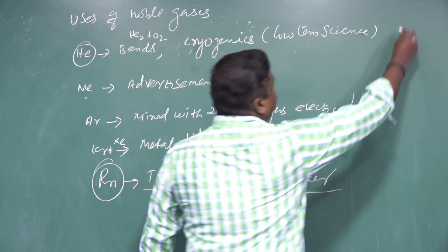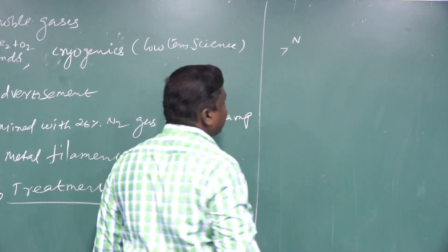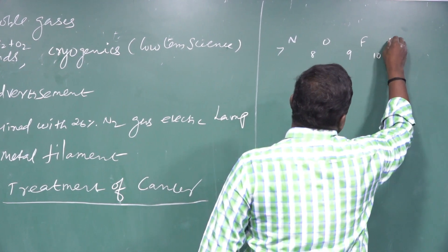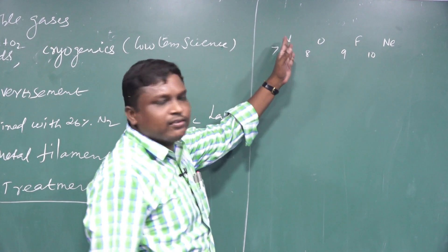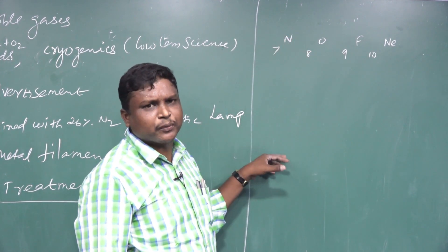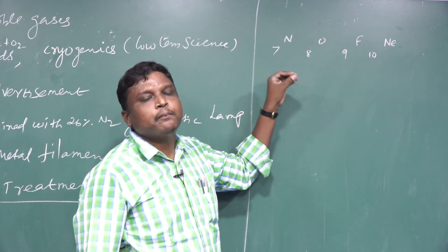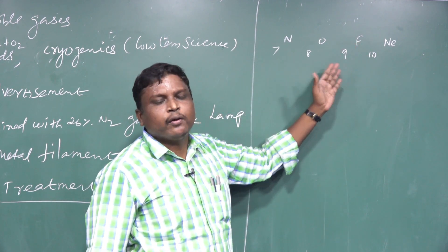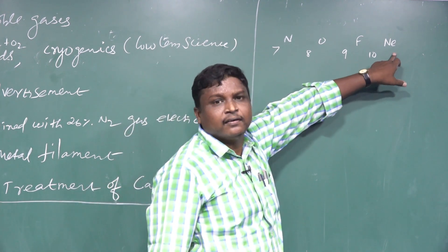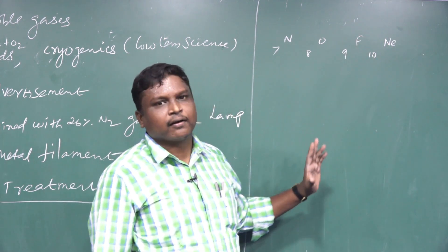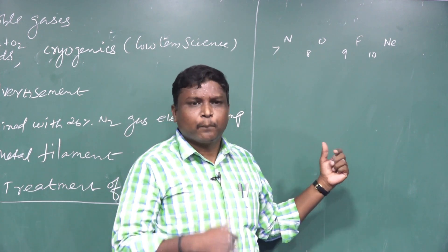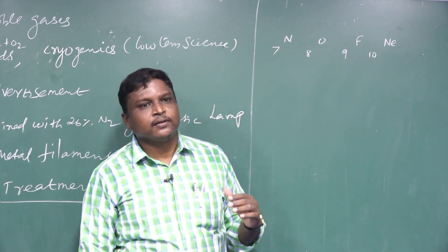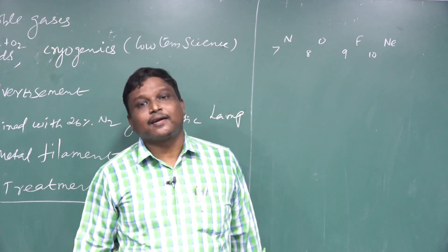Conclusion: the p-block elements include nitrogen (atomic number 7), oxygen (atomic number 8), fluorine (atomic number 9), and neon (atomic number 10). The nitrogen family contains nitrogen, phosphorus, arsenic, antimony, and bismuth. The oxygen family contains oxygen, sulfur, selenium, tellurium, and polonium. The halogen group (number 17) contains fluorine, chlorine, bromine, iodine, and astatine. Group 18 contains helium, neon, argon, krypton, xenon, and radon. Topics covered included general properties, physical properties, preparation of halogens, interhalogen compounds, chemical properties, and uses. Next class will cover d-block elements.